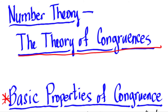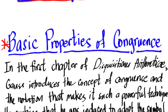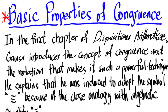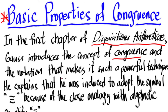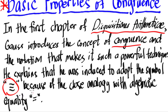To start off, we're going to begin with the basic properties of congruences. Let's go back a little bit in history. Hopefully you watched the first video concerning Gauss — our princeps mathematicorum, our prince of mathematicians. In the first chapter of his famous book Disquisitiones Arithmeticae, Gauss introduces the concept of congruence and the notation that makes it such a powerful technique. He explains that he was induced to adopt the symbol — the triple parallel lines — because of the close analogy with algebraic equality, or simply the equal sign. The equal sign is composed of two parallel lines, while the symbol for congruence is composed of three parallel lines.